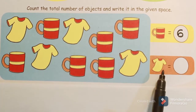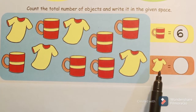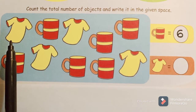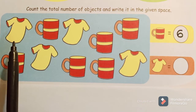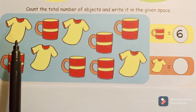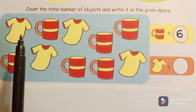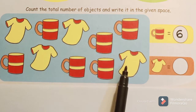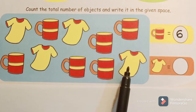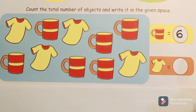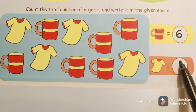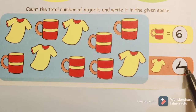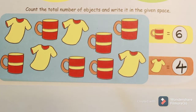Now let us see the next object — it is a shirt. Let us count the number of shirts: one, two, three, four. How many shirts are there? Only four shirts. Let us write the number of shirts present in this picture.